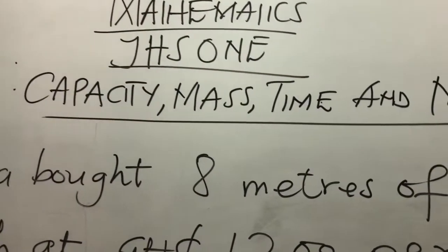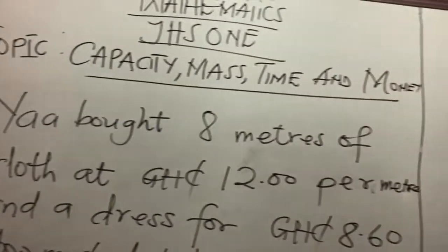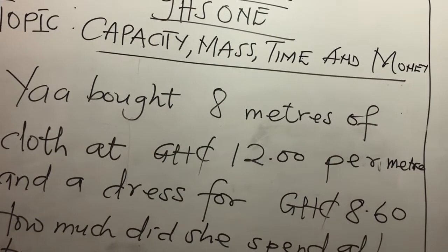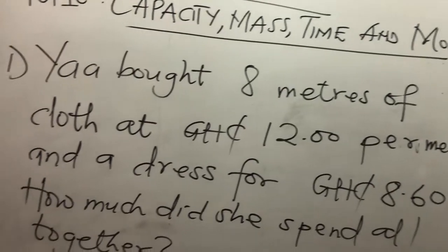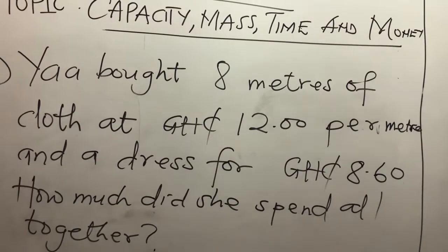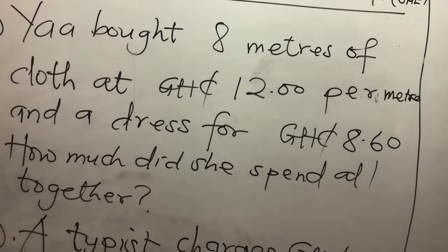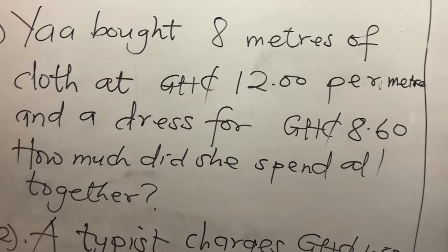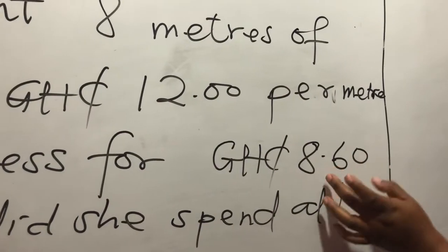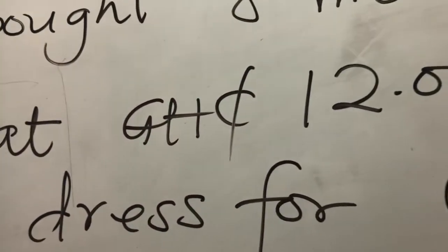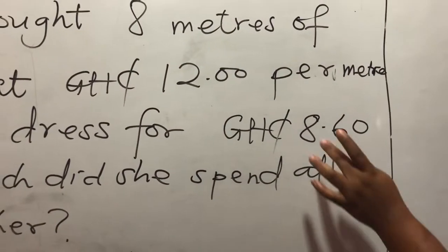Let's look at our first question for today. The first question asks: how much did she spend all together? Now, when you see money written here, you know that we are talking about 8 cedis and 60 — what? 60 pesewas. This one is just 12 pesewas. So this portion after the decimal point is 60. After the decimal is the pesewas — that is the 60 pesewas points.